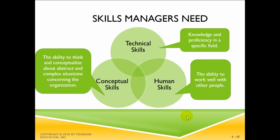What types of skills do managers need? Robert Katz proposed that managers need three critical skills: technical, human, and conceptual. Technical skills are the job-specific knowledge and techniques needed to proficiently perform work tasks. These tend to be more important for first-line managers because they typically manage employees who use tools and techniques to produce organizational products or services. Human skills involve the ability to work well with other people, both individually and in groups. Because all managers deal with people, these skills are equally important at all three levels.